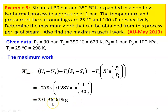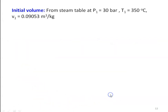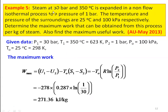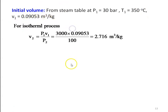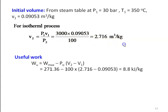From the steam table at P1 = 30 bar, T1 = 350°C: V1 = 0.09053 m³/kg. For isothermal process, V2 = P1·V1/P2 = 3000×0.09053/100 = 2.716 m³/kg. Maximum useful work = W_max − P0(V2 − V1) = 271.36 − 100×(2.716 − 0.09053) = 8.8 kJ/kg.